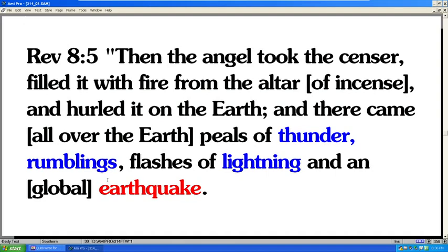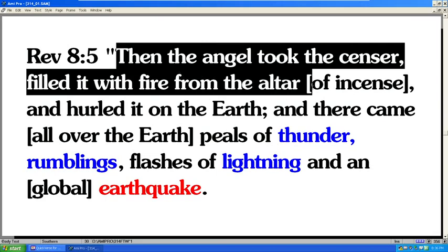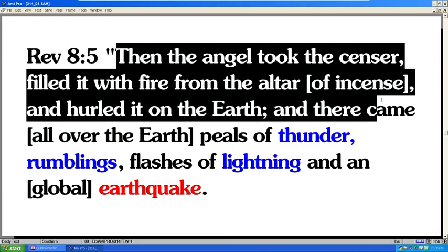Revelation 8:5 is a passage that puzzles a lot of people. Then the angel took the censer, filled it with fire from the altar of incense. And incidentally, when you see these little brackets, this is where I have inserted words to complete the thought so that you understand what you're seeing and what I'm saying lines up.